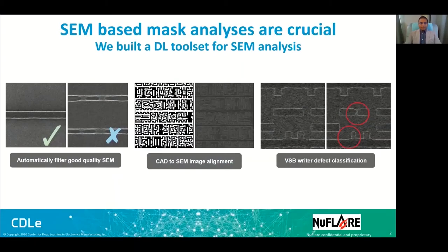We built three tools in the deep learning toolset for SEM analysis. The first one is to automatically filter good quality SEM images, the second is image alignment for CAD to SEM, and the third is defect classification for VSP mask write.